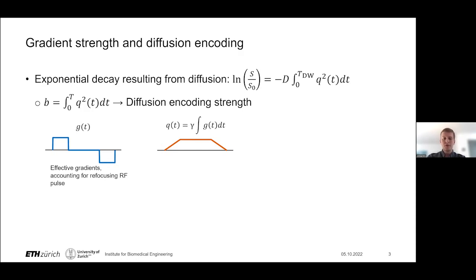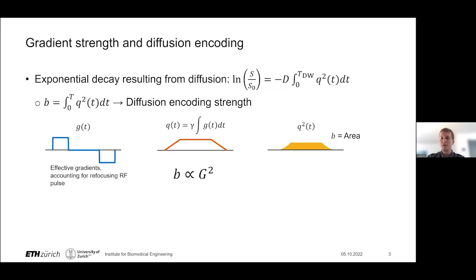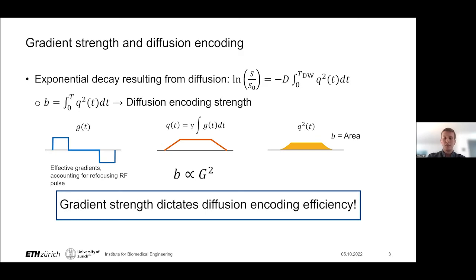From the equation for exponential decay, this integral of q² is equal to our b-value, which quantifies our diffusion encoding strength. The q² waveform's yellow area represents our b-value. Scaling in G corresponds to equivalent scaling in q, and scaling to the second power in q², and therefore in our b-value. So the b-value is proportional to the gradient amplitude squared, which indicates that gradient strength dictates diffusion encoding efficiency — by using stronger gradients, we achieve more b-value per unit time.